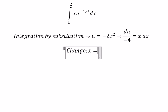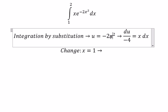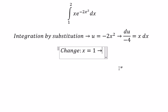If x equal to number 1, so we put number 1 in here. And you got u equal to negative number 2.